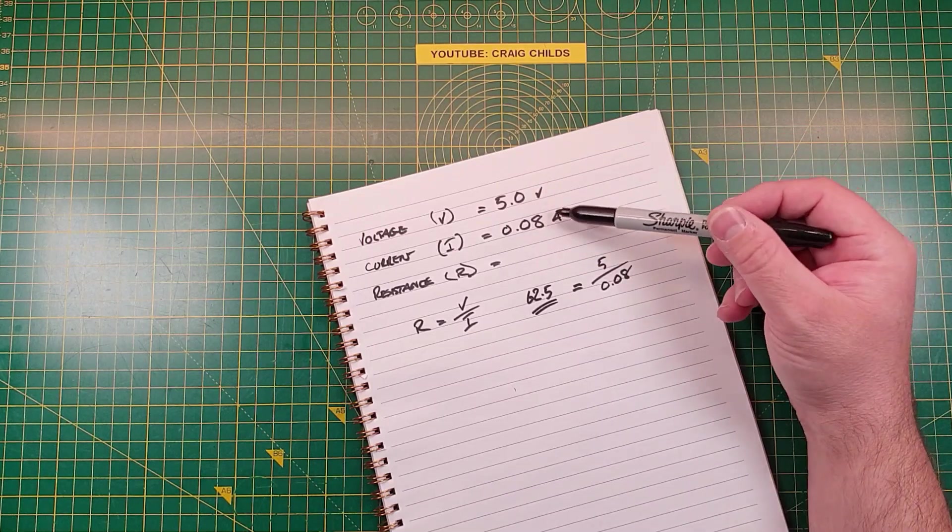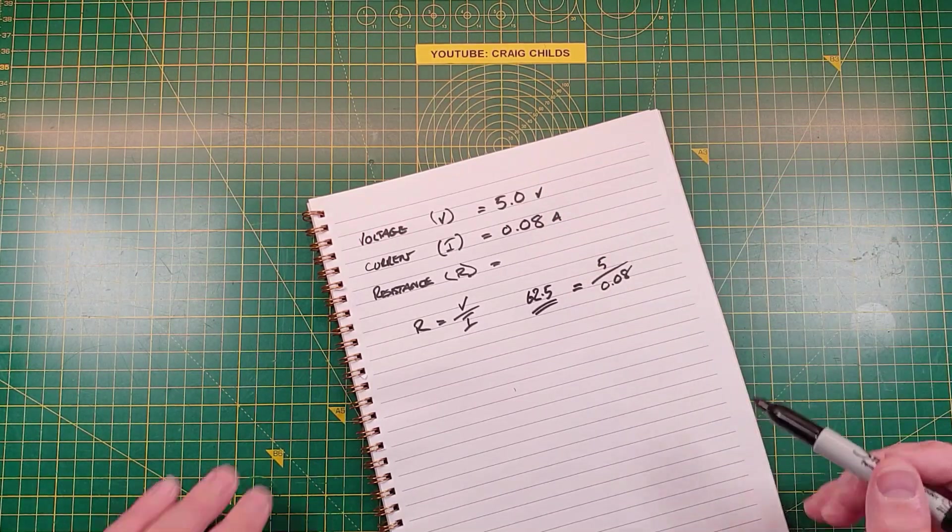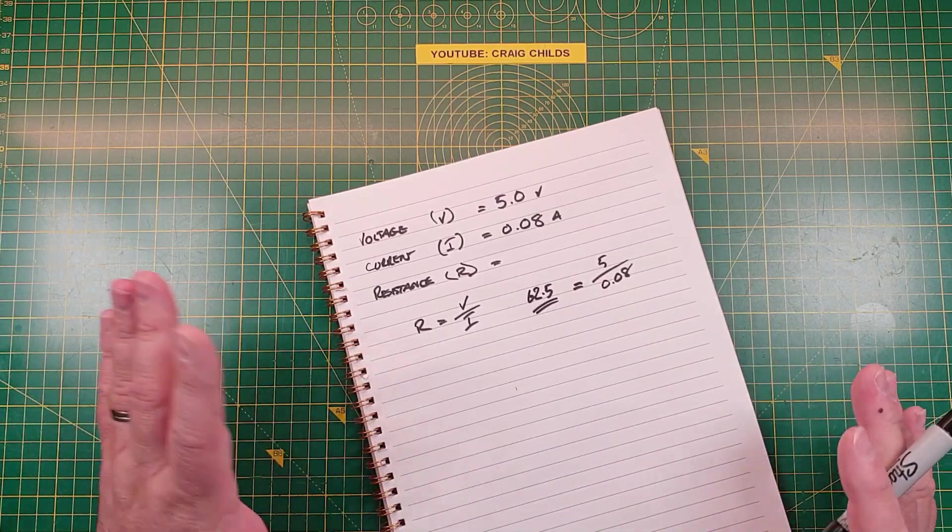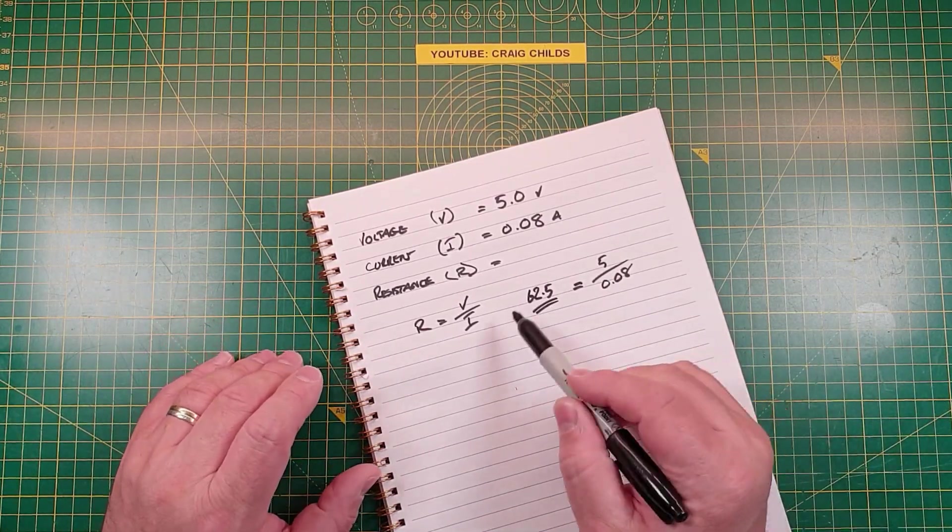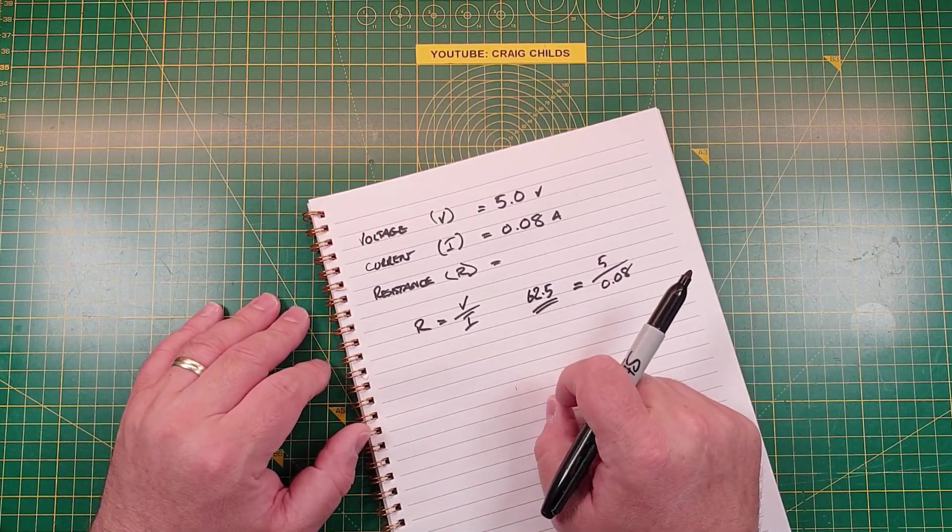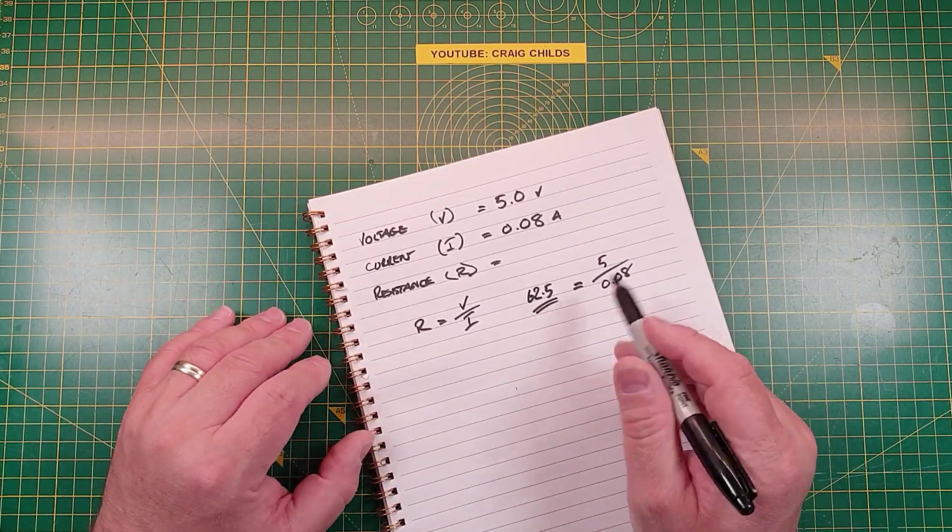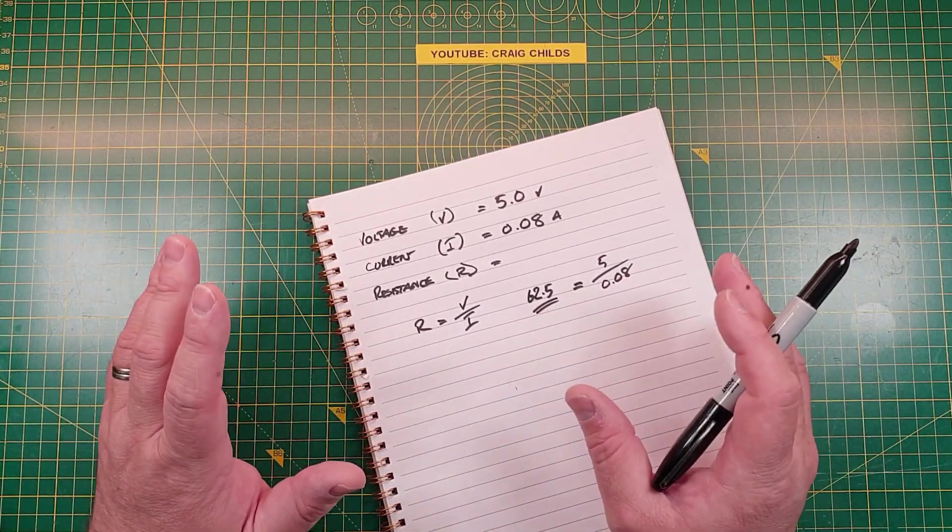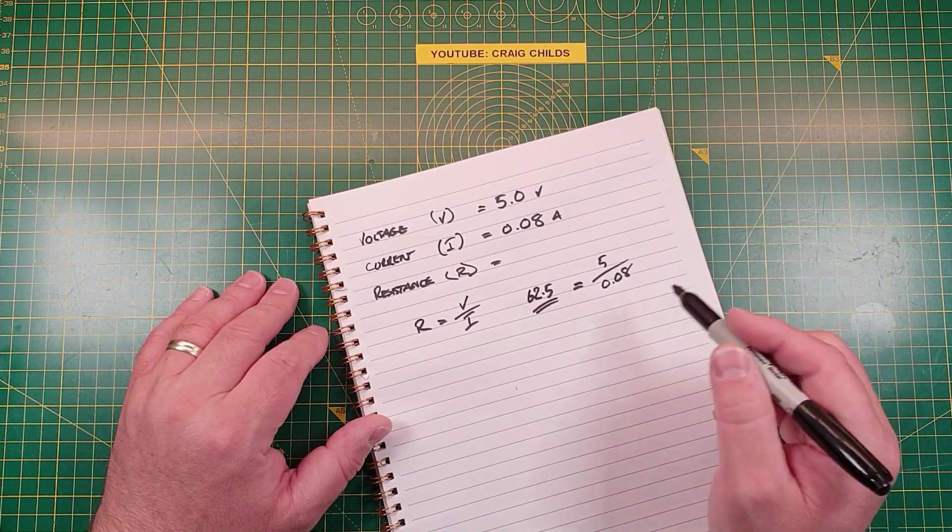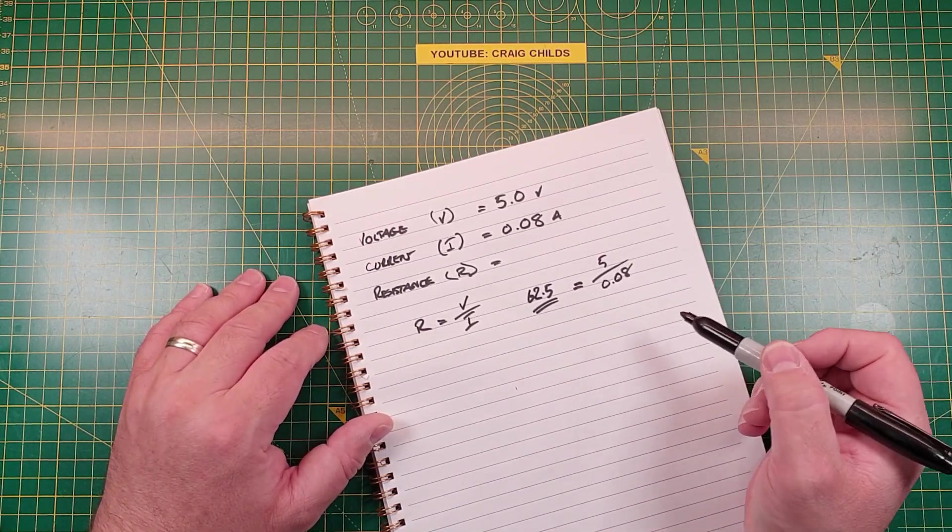Okay, so that's our resistance value, our target resistance value. So that would give us, these LEDs would cause them to run at 80 milliamps on a 5 volt supply. So that's all good and well, but you don't get a 62.5 ohm resistor.